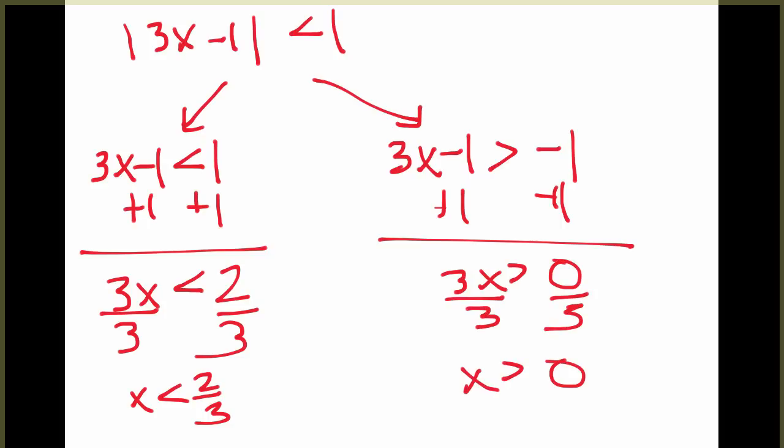So what we need is x to be less than 2 thirds, and x to be greater than 0. So less than 2 thirds would be to the left here, and greater than 0 would be to the right. And so the solution is right here where the two overlap.